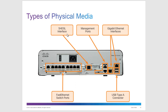Here we have the different ports available on a Cisco router — management ports like the Aux port, two console ports (one for USB, one for the standard rollover cable), gigabit ethernet ports, and USB Type-A connectors, which could be used to upgrade your firmware.